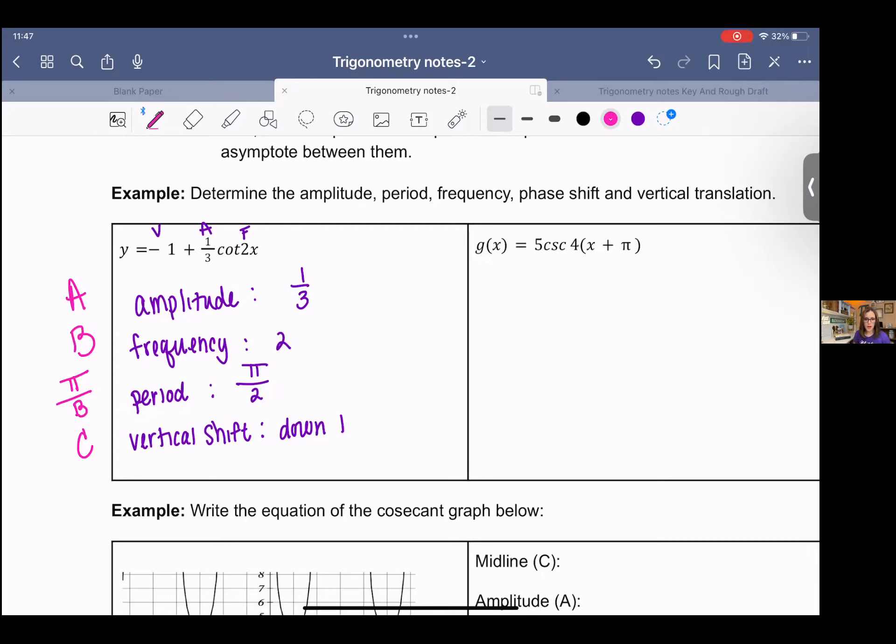For the next one, five times cosecant of four times x plus pi. So I want you to find all the pieces, pause it, try it, come back and check your work. You should have gotten an amplitude of 5, that's the number in front of cosecant, a frequency of 4, that's the number behind cosecant. This is amplitude, frequency, period is, since this is cosecant, we are using 2 pi. We're saying one full wave completes in a 2 pi span. So that's 2 pi over the frequency.